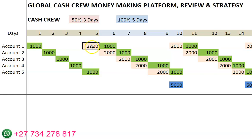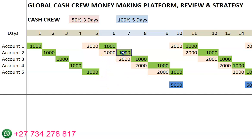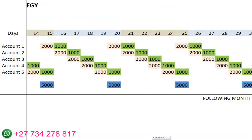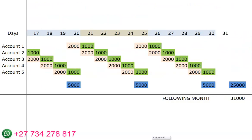This 2,000 rand will include your initial amount of 1,000 rand and a profit of 1,000 rand. On the sixth day, you then take 1,000 rand and put it back into the program and keep 1,000 rand in your pocket — and you continue like that. If you continue this way until the end of the month, you will see that per week you will be able to make 5,000 rand, and at the end of the month you will be able to make 25,000 rand.